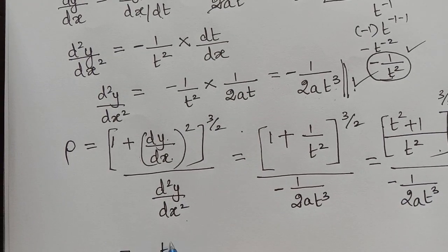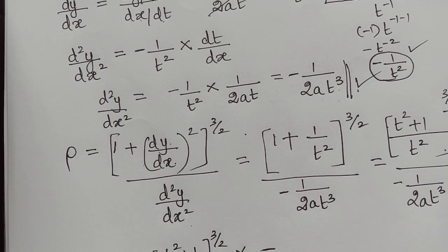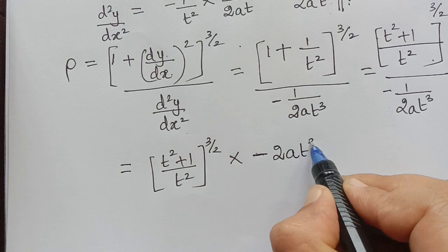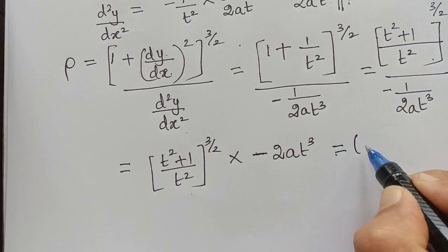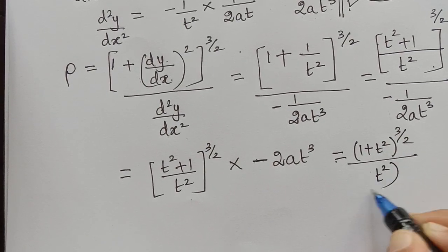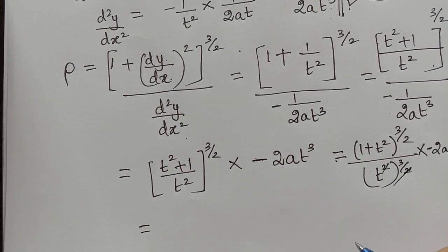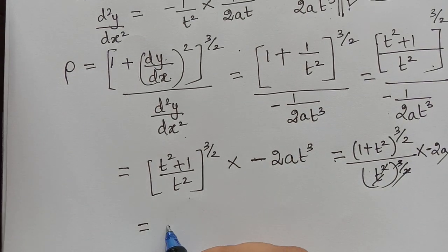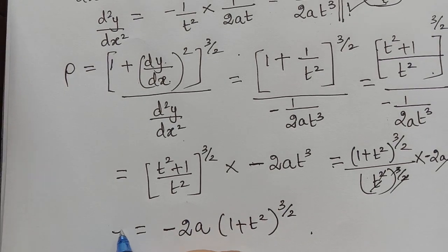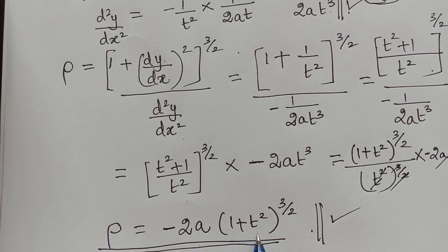Taking the LCM in the numerator gives (t² + 1)/t², raised to the power 3/2, multiplied by minus 2at³. Separating the power: (1 + t²)^(3/2) divided by t^(2×3/2) equals t³, multiplied by minus 2at³. The t³ terms cancel, giving the radius of curvature as minus 2a(1 + t²)^(3/2).